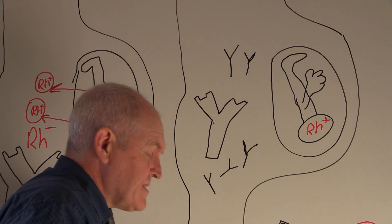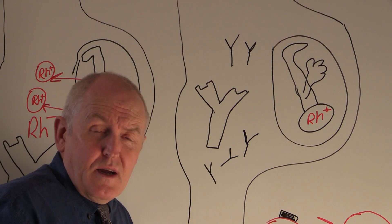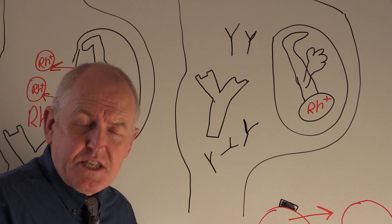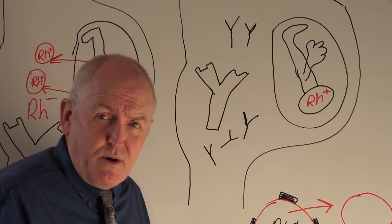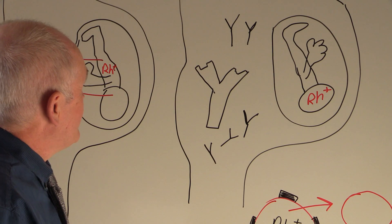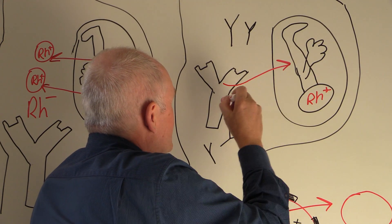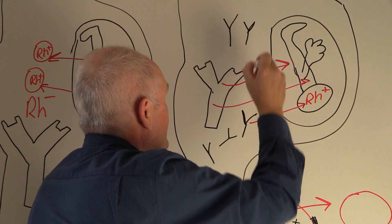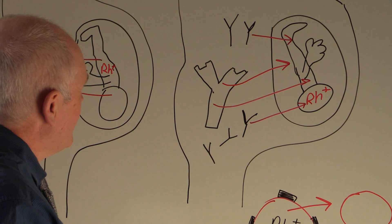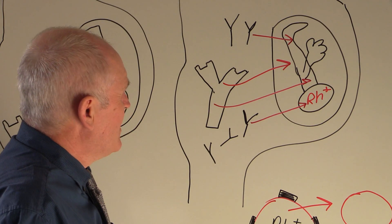The problem is that transplacental migration of antibodies does occur, and in fact it's essential — when the baby is born we want the baby to have passive immunity from the mother's antibodies against bacterial and viral diseases. But the downside when we have Rhesus factor antibodies is that these antibodies can migrate into the baby's circulation, and they will start to agglutinate and hemolyse the fetal red cells — the baby will develop hemolysis.